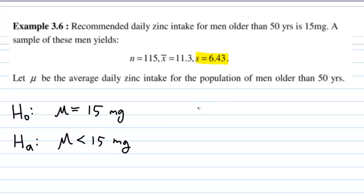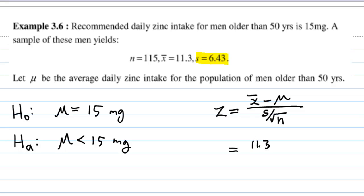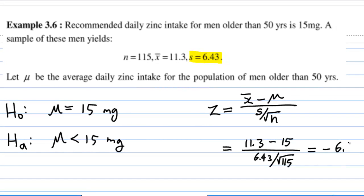We are going to look at the test statistic: z equal to x bar minus mu over s over square root n. z equals 11.3 minus 15, over 6.43 over square root of 115, and this is equal to negative 6.17.